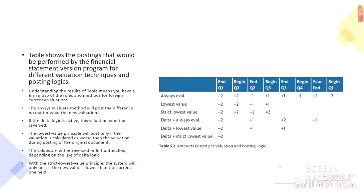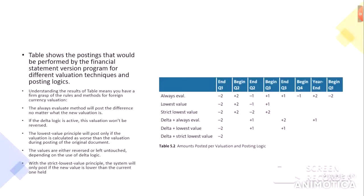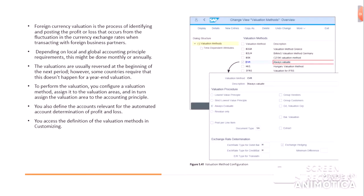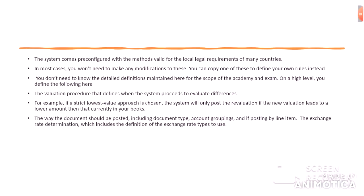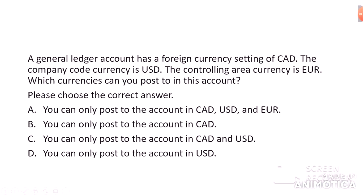Now let us see a few certification-related questions. How many intervals are defined for the foreign currency valuation run ID per client? If you see the selection screen, there is no such interval — it is only one interval. In a valuation method, which of the following is not a valuation approach for foreign currency valuation? The answer is 'strict highest rate of interest principle.' A general ledger account has a foreign currency setting of CAD; the company code currency is USD. Which currencies can you post to in this account? Since the GL account has a specific foreign currency setting, it is only possible to post to that particular foreign currency — no other currencies are allowed.